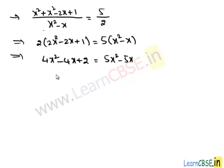Now rearrange RHS and LHS. We have 5x square minus 5x, and on RHS we have 4x square minus 4x plus 2. Let us transpose 4x square to LHS.